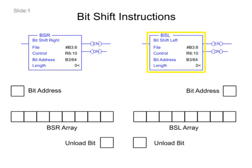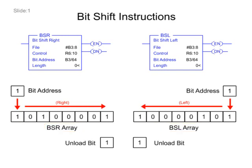The BitShiftLeft and BitShiftRight instructions load data into a bit array one bit at a time. The data is shifted through the array and unloaded one bit at a time.